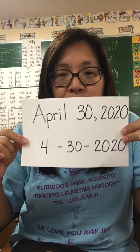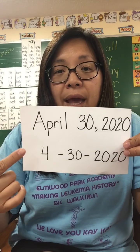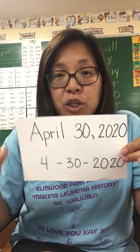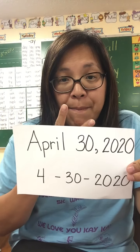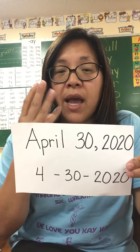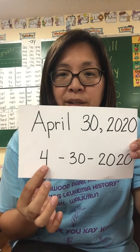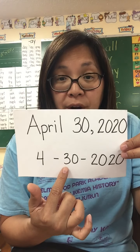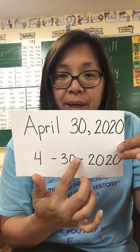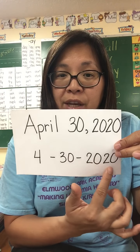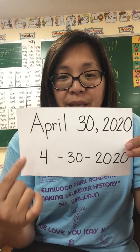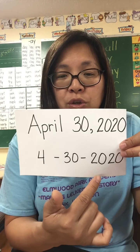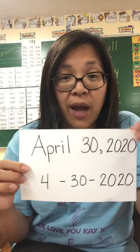Remember when we were in class together and we talked about our date — we like to write our date using the number system, just like the grown-ups do. January is the first month, February is the second month, March is the third month, April is month number four. I put a dash to separate the two numbers, and today's number is 30 because today is April 30th. Then a dash to separate the day from the year, and our year is 2020 — so it is 4-30-2020.